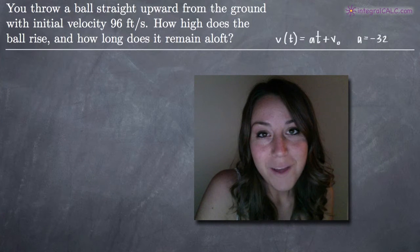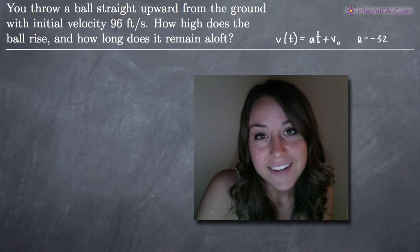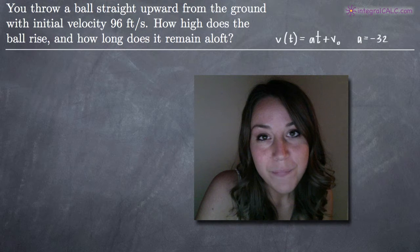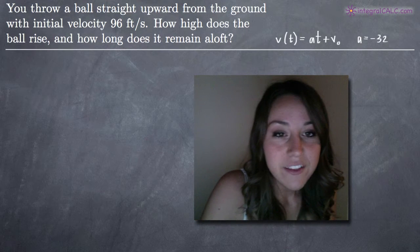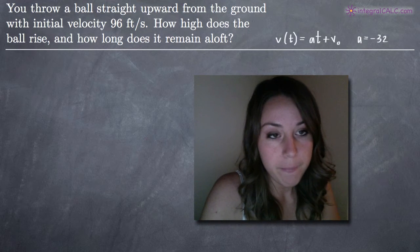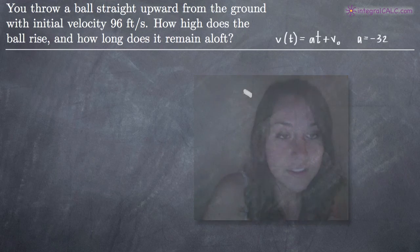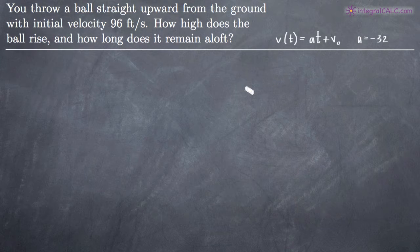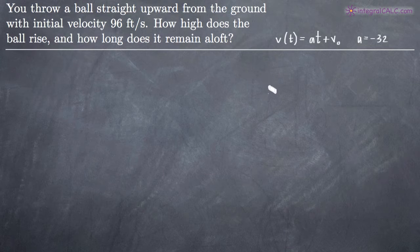Hi everyone! Welcome back to integralcalc.com. Today we're going to be doing a vertical motion problem. In this one, we've been given a word problem which says: you throw a ball straight upward from the ground with an initial velocity of 96 feet per second. We've been asked to find out how high the ball rises and how long it remains aloft.